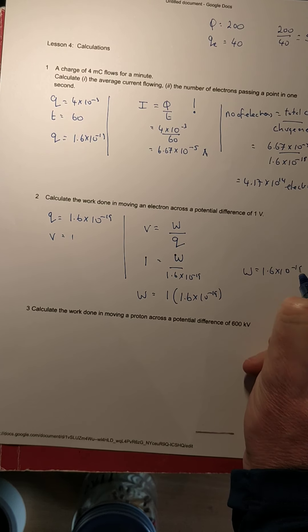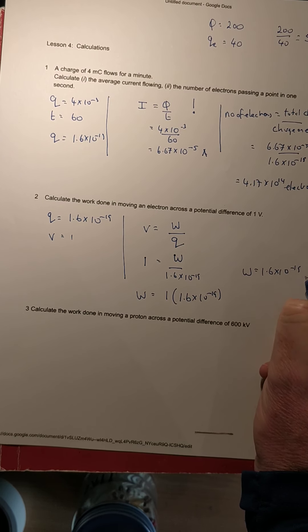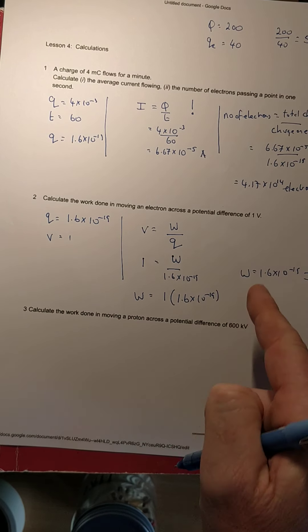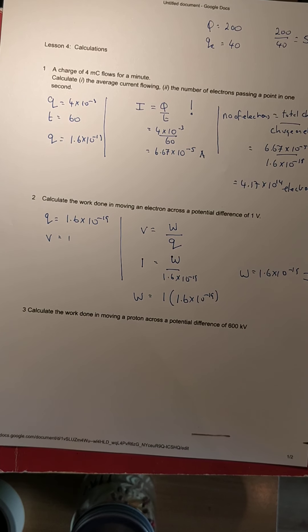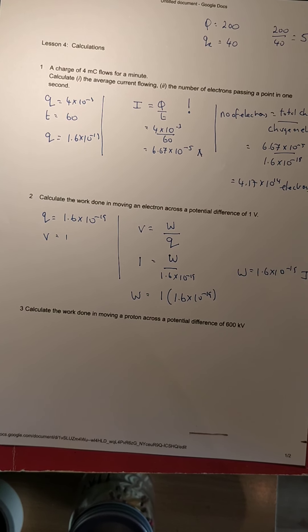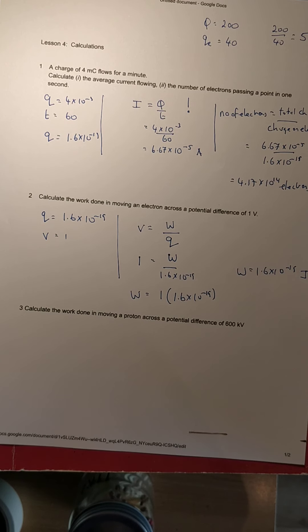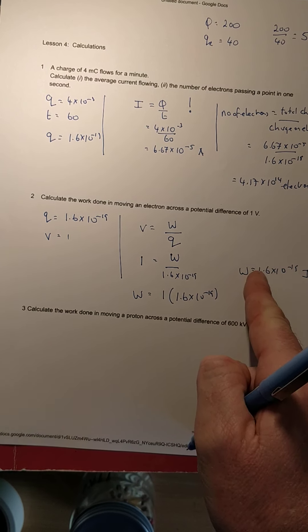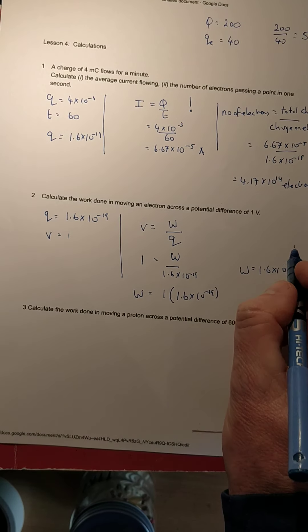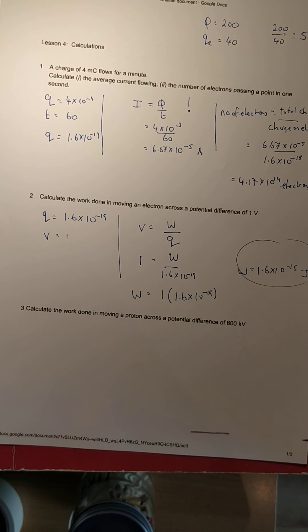So the answer is just 1.6 × 10⁻¹⁹, and be careful here, it is joules. So the work done in bringing an electron across a voltage of 1 volt is called an electron volt, and it is 1.6 × 10⁻¹⁹ joules. In the atom we've been using that as a conversion from electron volts to joules.